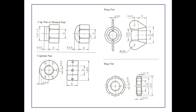The cap/dome nut is used on handles of two-wheelers, cycles, and gym equipment for aesthetic purposes. The capstan nut is a cylindrical nut with holes around its perimeter — maybe four, six, or eight depending on dimensions — and requires a special spanner for assembly and removal. The ring nut is used for assembling cycle sprockets or spindles between bearings, also requiring a special spanner. Slots are present in the ring nut to insert the spanner.